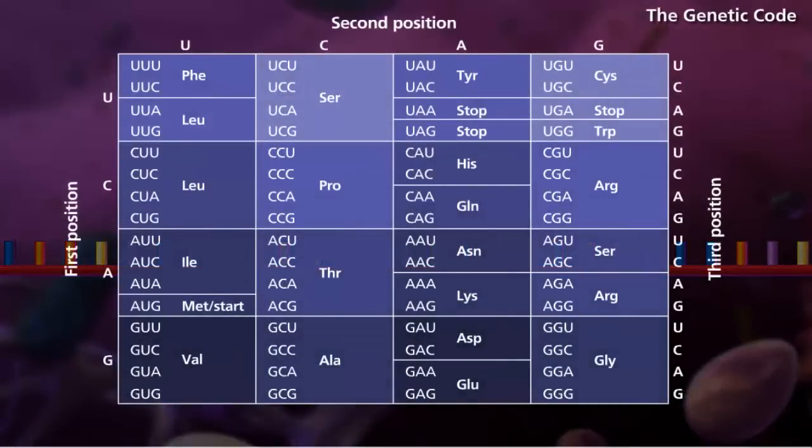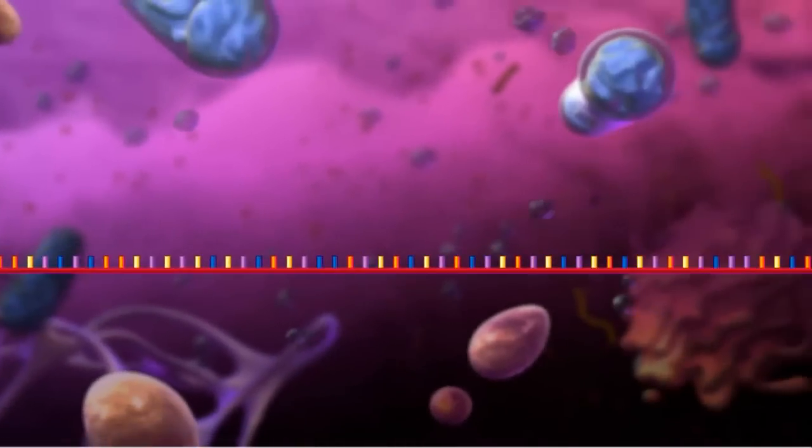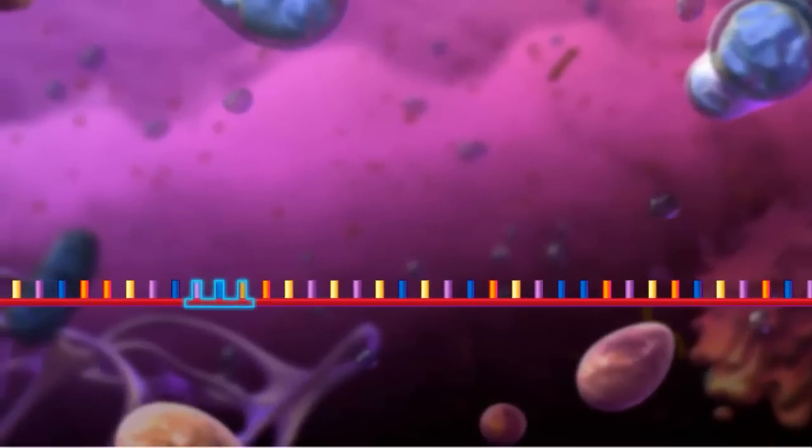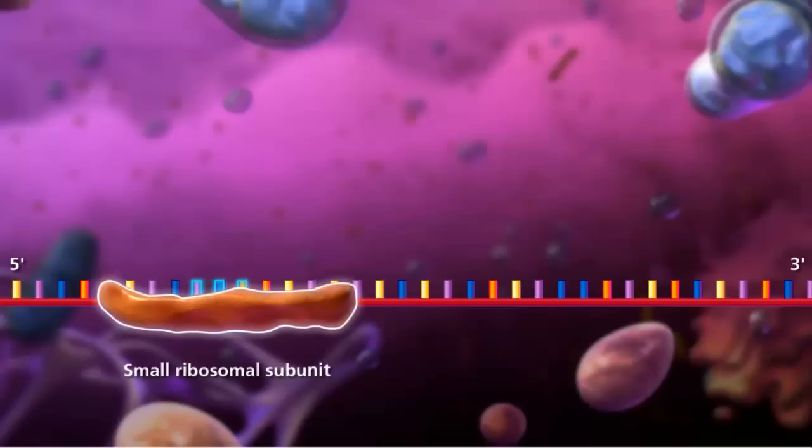There are four special codons: one that codes for start and three that code for stop. Translation begins with the messenger RNA strand binding to the small ribosomal subunit upstream of the start codon.